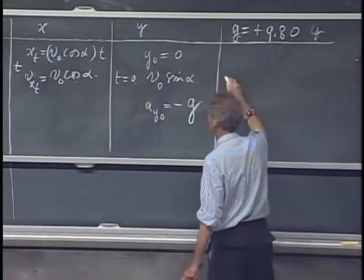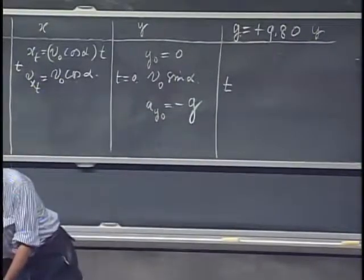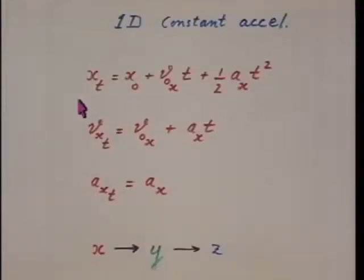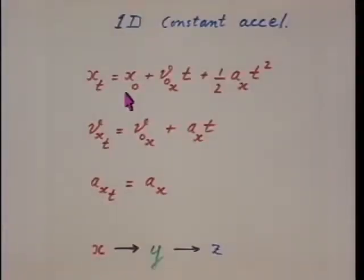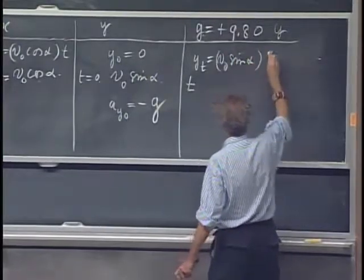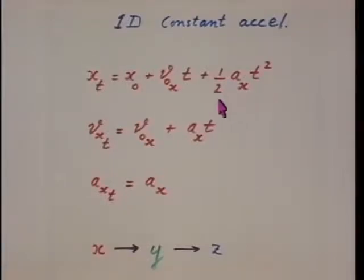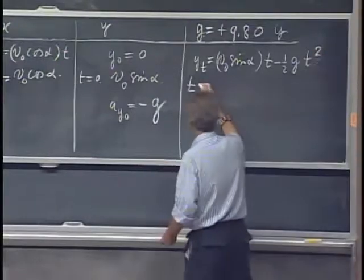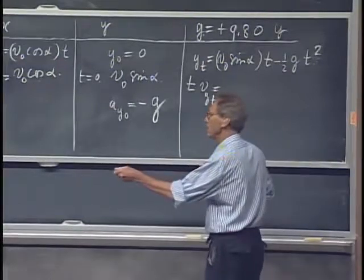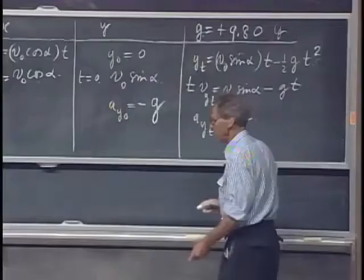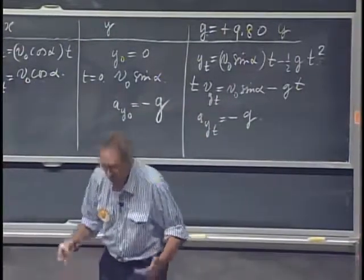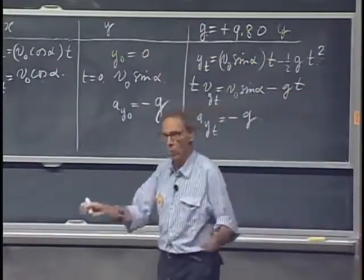So that tells the story at t equals zero in the y direction, and now we have to complete it at time t equals t. At time t equals t, we have the first line there. y zero is zero, so we have y as a function of time. So I get v zero sine alpha times t, plus one-half, but it is minus, one-half gt squared, and now I get the velocity in the y direction at time t. That is going to be v zero sine alpha minus gt, and the acceleration in the y direction at any moment in time equals minus g.